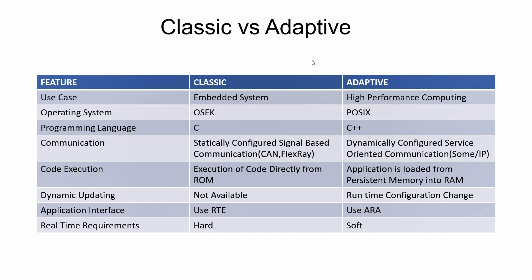Regarding dynamic updating: in Classic AutoSAR this is not possible, while in Adaptive AutoSAR runtime configuration changes are possible. Regarding the application interface: Classic uses RTE, while Adaptive uses ARA. Regarding real-time requirements: Classic has hard real-time requirements, while Adaptive has soft real-time requirements.